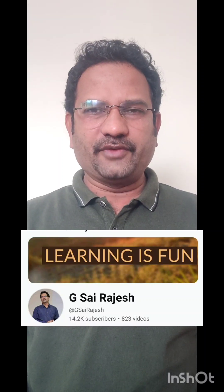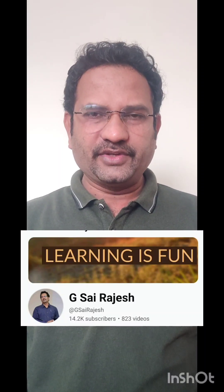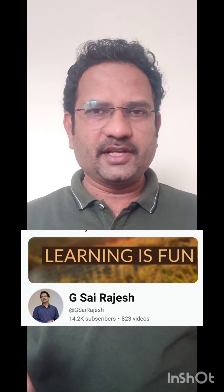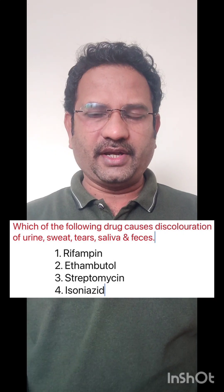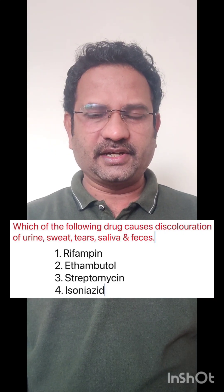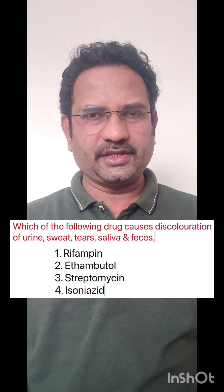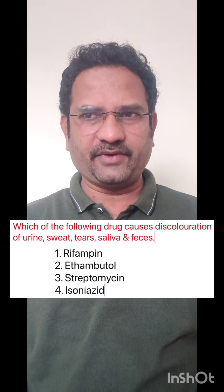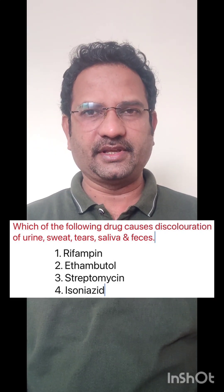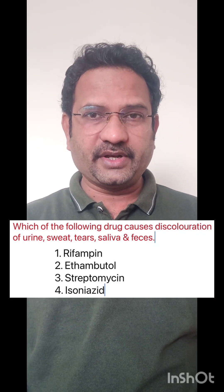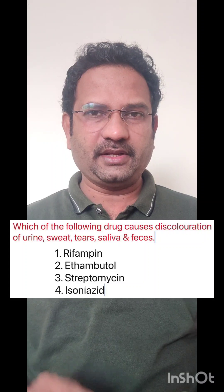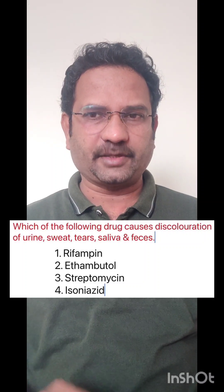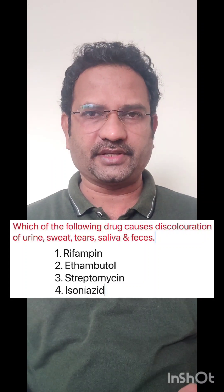Hello everyone, welcome to the video on adverse effects of anti-TB drugs. Let us look at the question first. Which of the following drug causes discoloration of urine, sweat, saliva and faeces? Options given are rifampin, ethambutol, streptomycin and isoniazid.